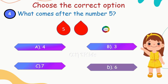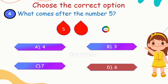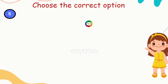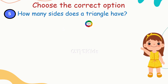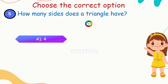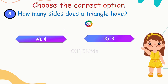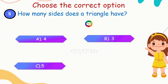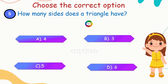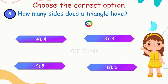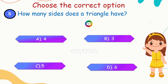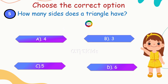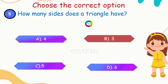Yes, number six is the correct answer. Next question: how many sides does a triangle have? Options: A) four, B) three, C) five, D) six. Yes, you're right — a triangle has three sides.